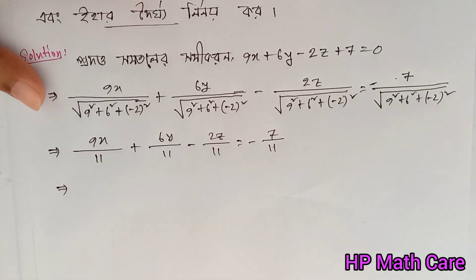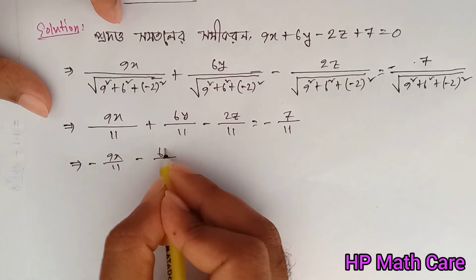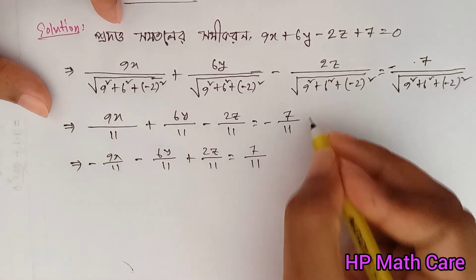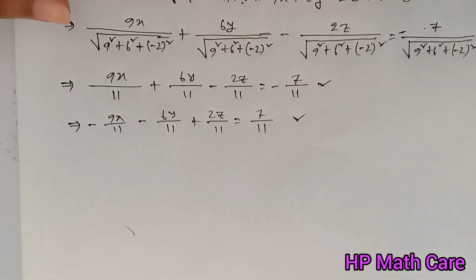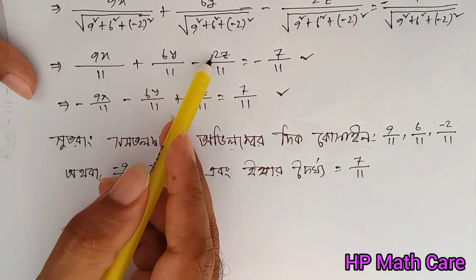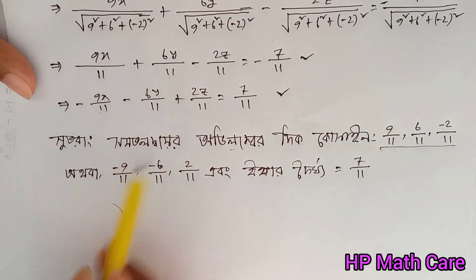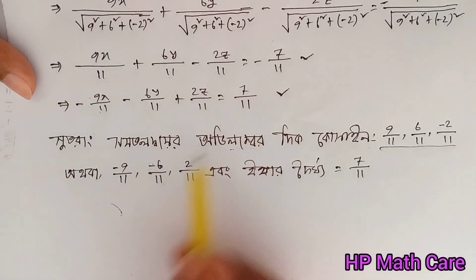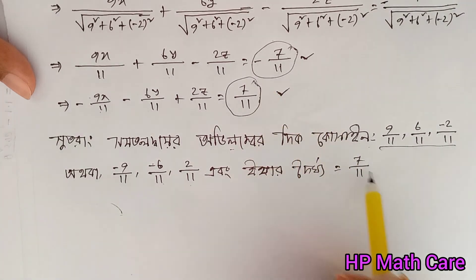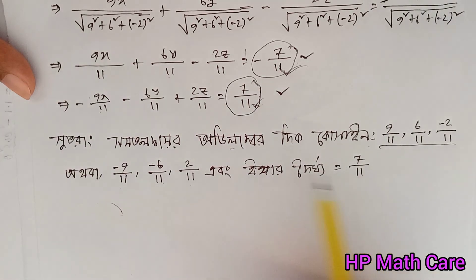9x is equal to 11, minus 6y is equal to 11, plus 2z is equal to 11, minus 2 is equal to plus — this is the same thing. How do you know this? So we will see what we are doing. 9 by 11, 6 by 11, minus 2 by 11. And then you can see, we are doing minus 2, minus 6 by 11, 2 by 11. So we are doing minus 9 by 11, minus 6 by 11, 2 by 11. And we are doing 7 by 11 — we are doing negative. So in this case, you will say that 0 is 7 by 11. That's all positive. So the distance is 7 by 11. See you in the next video.